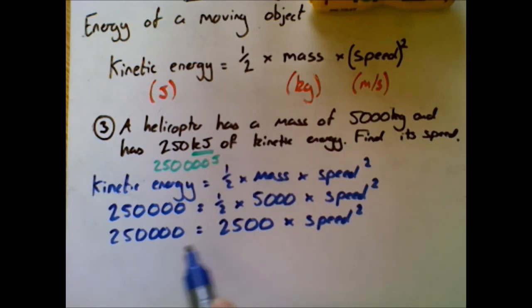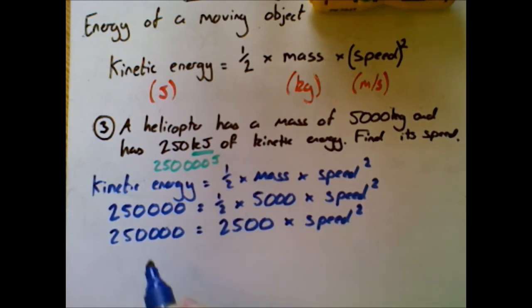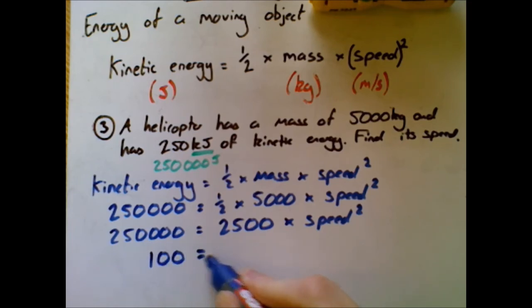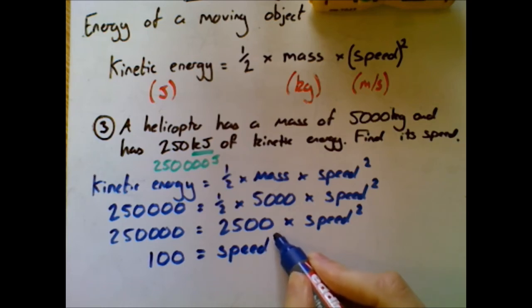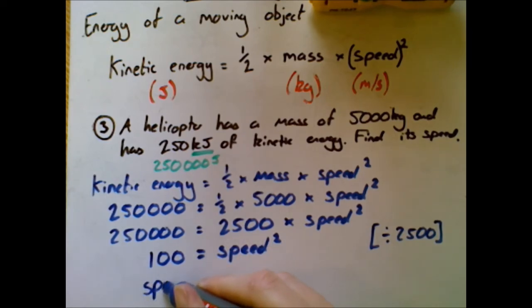So 250,000 divided by 2500 is 100. Imagine if you're in maths, we're dividing both sides by 2500. So I get 100 equals speed squared. And like you might do in maths, if you want to just make it really clear what you've done, by all means write that in brackets here just to show, well that's what I did at that step - I divided it by 2500.